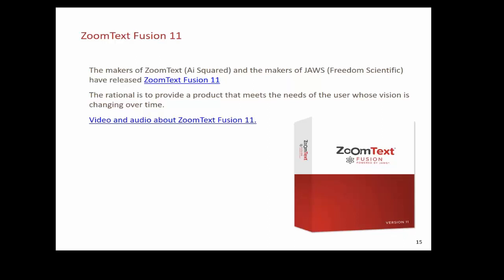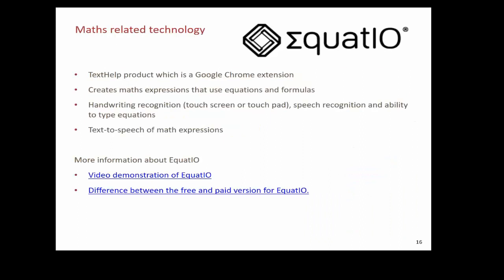Moving to slide 15 — ZoomText Fusion 11. What is ZoomText Fusion 11? Well, the makers of JAWS, Freedom Scientific, and the makers of ZoomText, AI Squared, got together and created ZoomText Fusion 11 — basically a combination of both JAWS and ZoomText. The rationale is to provide a product that meets the needs of a user whose vision is changing over time. It's also a cheaper way for an institution to purchase a licence of JAWS and ZoomText together. I recommend having a look at the link to the video because the idea of bringing screen magnification software and a screen reader together — these two particular softwares — really makes a lot of sense.